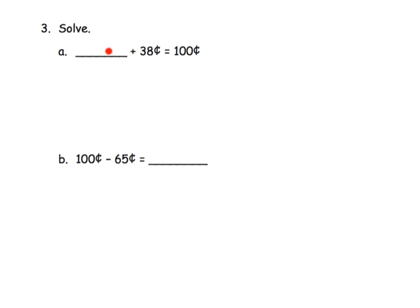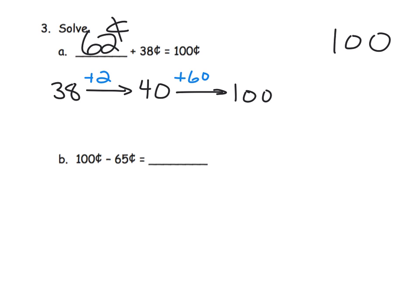On the last slide we're just going to let students choose whatever method they want to get these missing values. Using the arrow method, we're going to add 2 to get 40, then add 60 to get to 100. So our missing value was 62 cents.